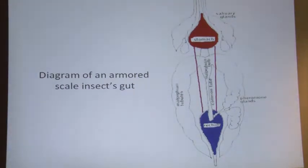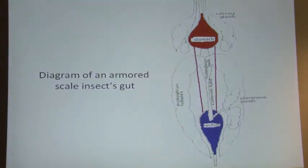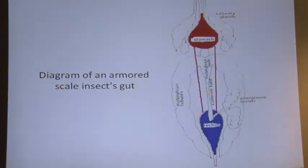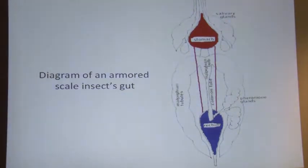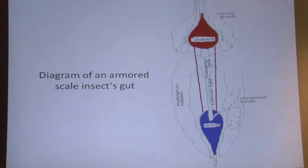What armored scales do is feed on cell contents, and most of the waste is expelled back out through the mouthparts into the host plant. There are two small connecting strands between the stomach and rectum that probably serve some filtering function, and very small amounts of nitrogenous wastes are excreted. But for the most part, armored scale insects don't really poop — and that makes sense because they're living underneath a waxy cover, and expelling waste into the spot where you live is a really bad idea.